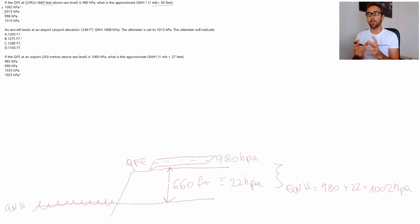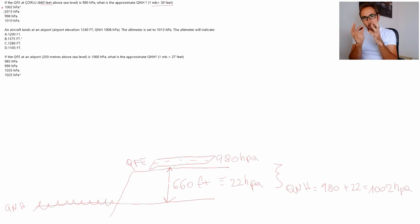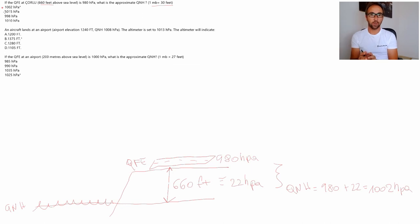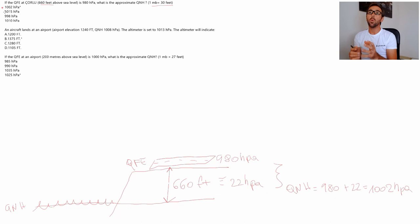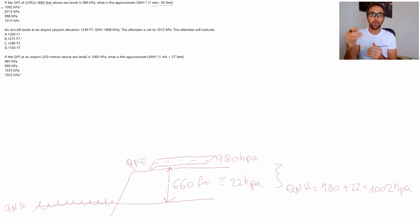When you are calculating and performing this calculation, it's very important that you understand that for every hectopascal there are 30 feet in altitude difference. Sometimes they say for every 27 feet there is one hectopascal, sometimes 30. Normally the questions will tell you which one to use. That's why when you make this type of exercise, it's important that you make a small drawing, because visually you can see whether you have to subtract or add feet.